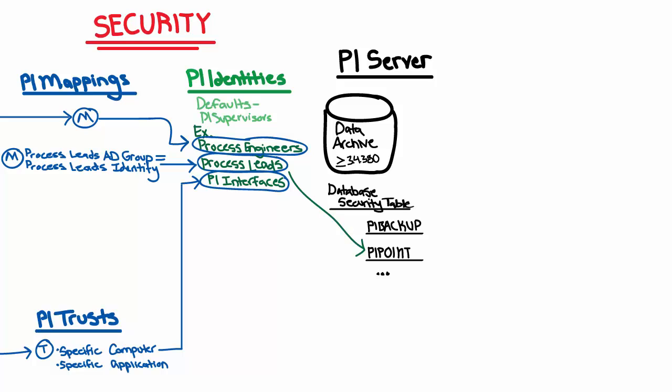When we talk about the permissions, those permissions are divided into different actions. For example, you could have read permissions, you could have write permissions, you could have no permissions. Remember that the PI identities themselves are the ones that get assigned read, write, or no permissions on these different areas of the database security table. Let's take PI Point for example — maybe our process leads need to be able to create new PI Points, and therefore they would need read-write access on PI Point. When we talk about read, that's the same as being able to see something.